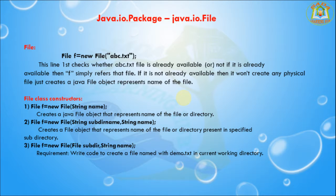The third constructor is: File f = new File(File subdirectory, String name). A common requirement is to write code to create a file named demo.txt in the current working directory.